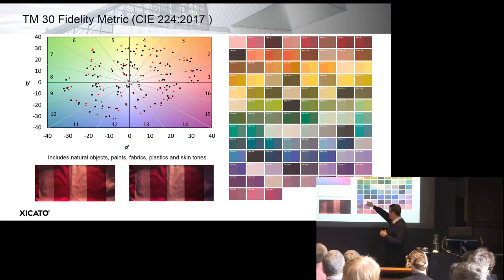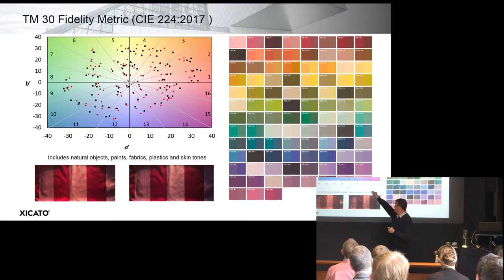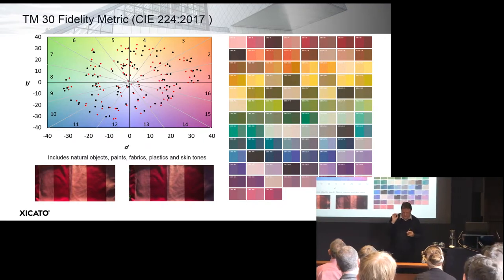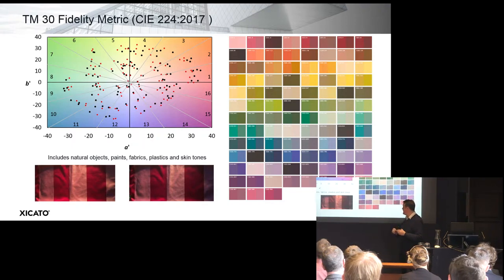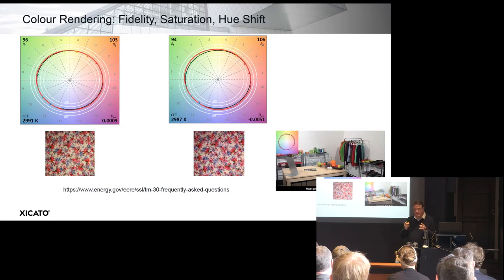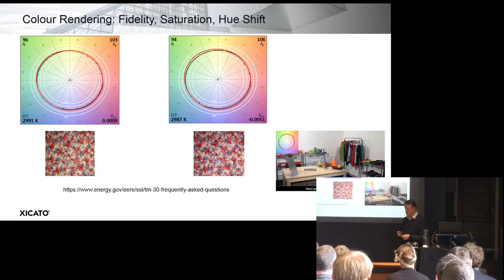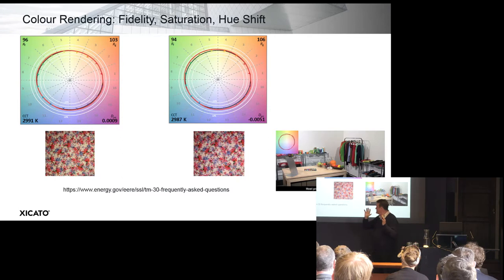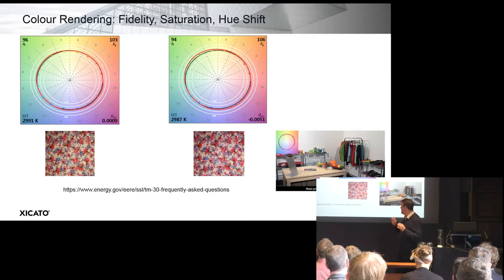Plotted here in CAM02-UCS colour space — a more uniform one — are the 99 test colours next to the reference colours. The average distance between the two gives you the fidelity metric. This is nothing about colour preference. Another metric is also given within TM30 which does broach this ground — this is the gamut metric. I recommend the link provided, and you will get the slides, which go into detail.